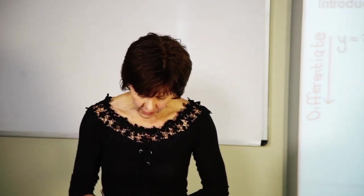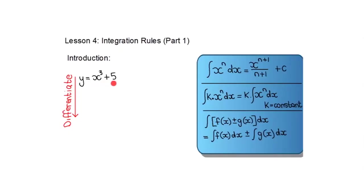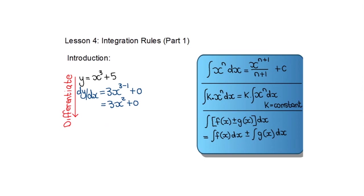Let's say I ask you to differentiate y = x³ + 5. The derivative: you take the exponent 3 to the front, x to the power of whatever you had minus 1, and the derivative of a constant was 0. So the answer will be 3x² + 0, or just 3x².